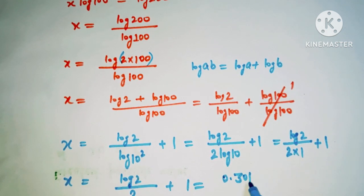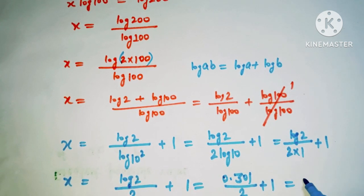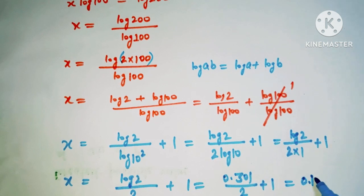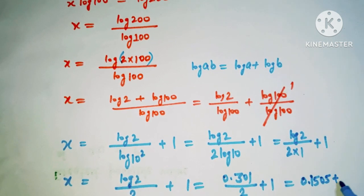So 0.301 divided by 2 plus 1, and this is 0.1505 plus 1.